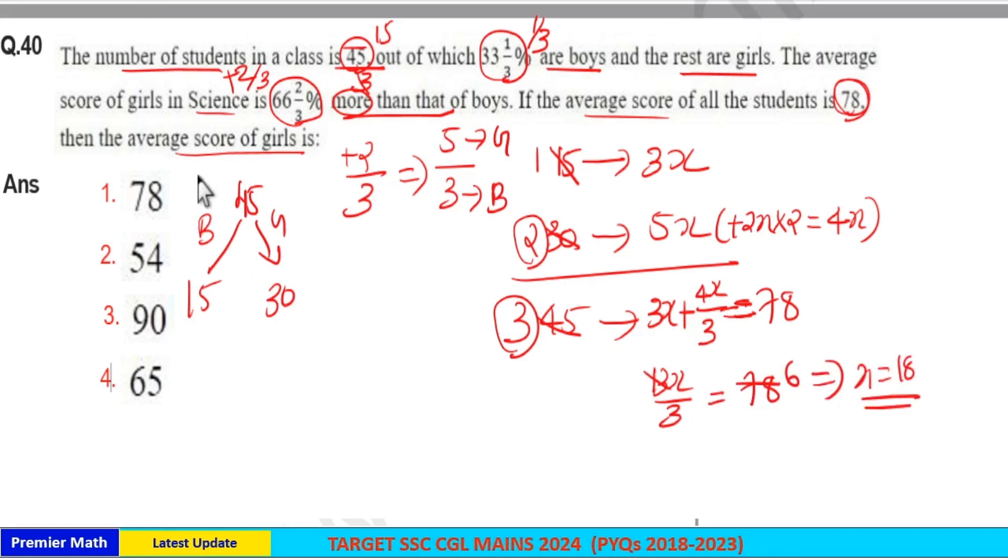We need average score of girls. Average score of girls equals 5x. 5x equals 5×18, which is 90. So option 3 is your answer.